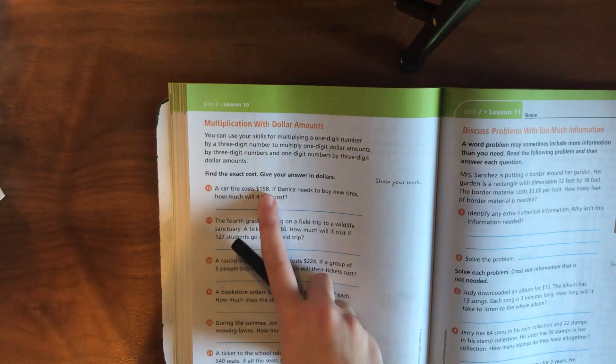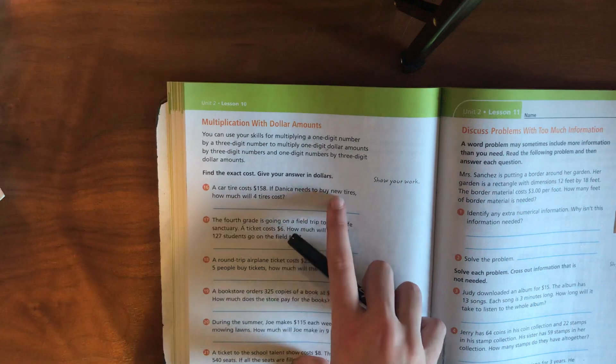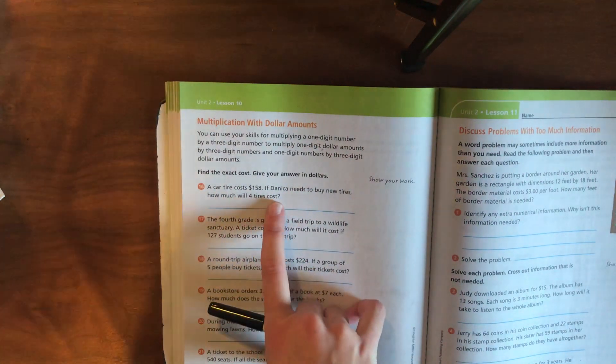For example, if I was getting stuff for a concrete job or for an engineering job or for missionary work or being a scientist, whatever, you're going to have things that cost money. You might be getting a car tire. A car tire costs $158. If Danica needs to buy new tires, how much will four tires cost?